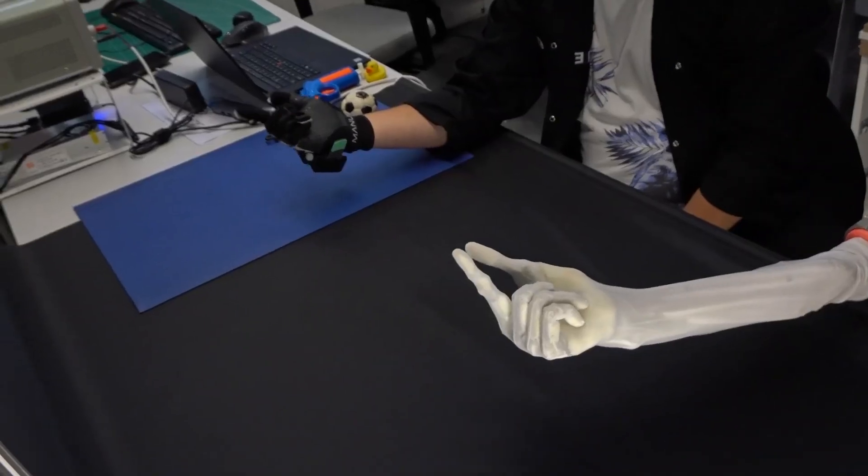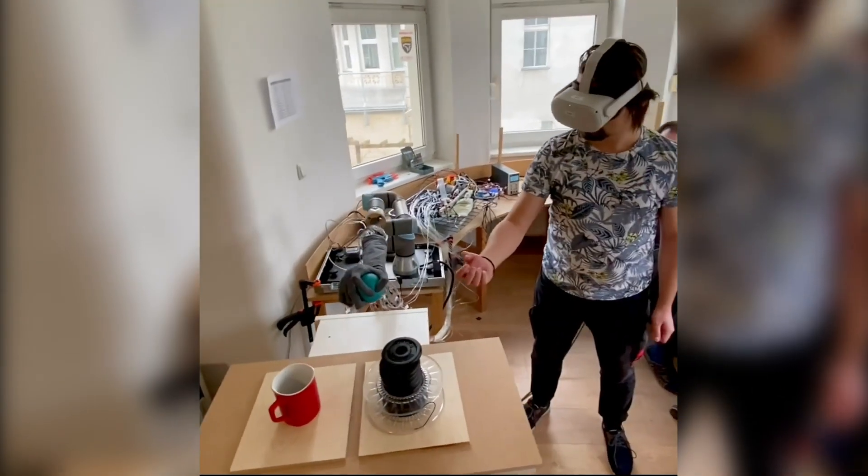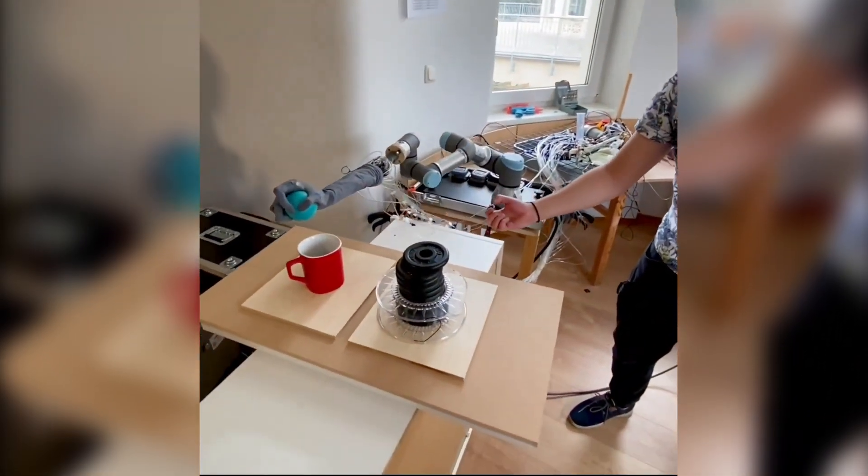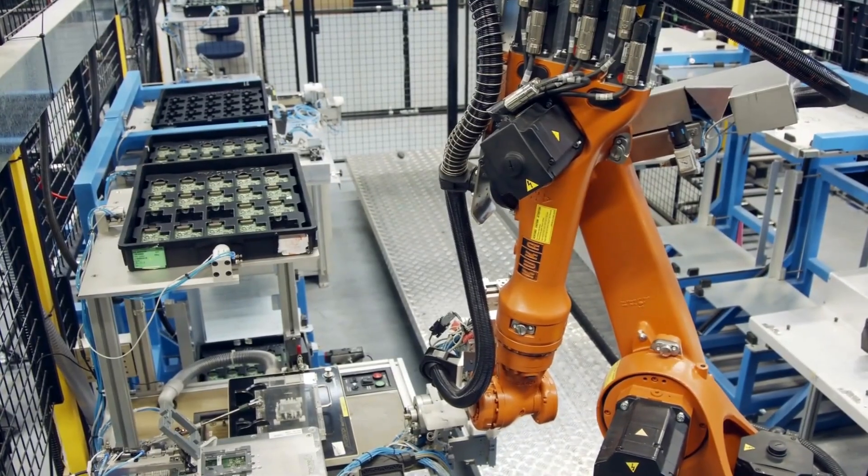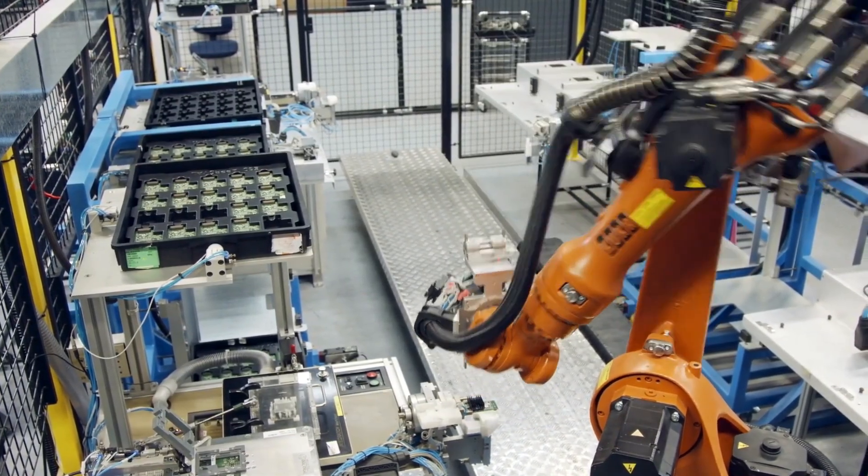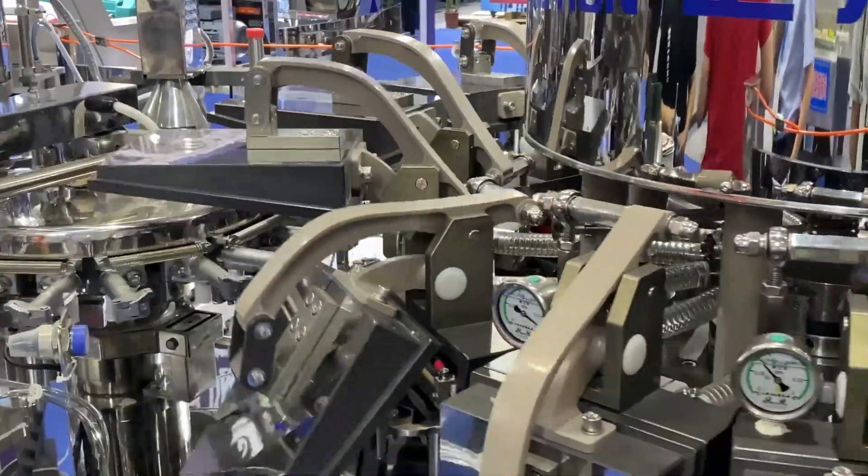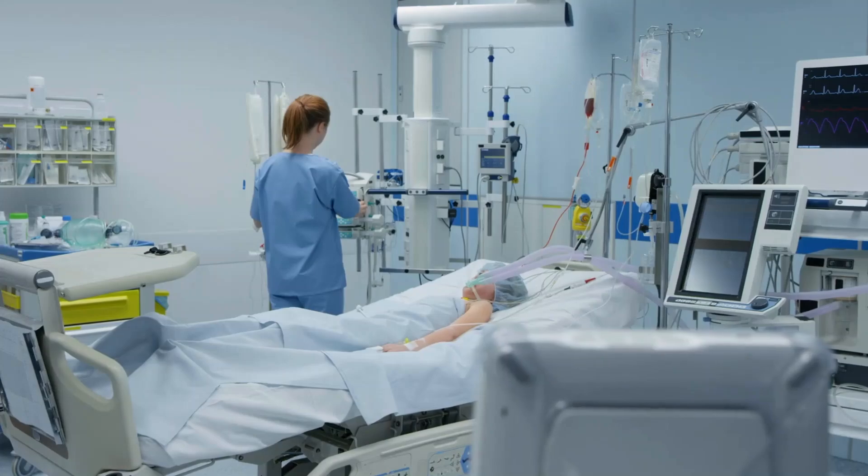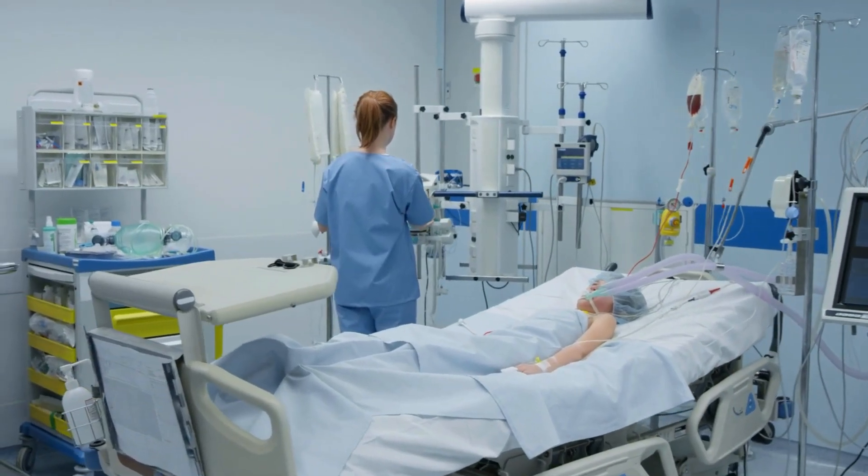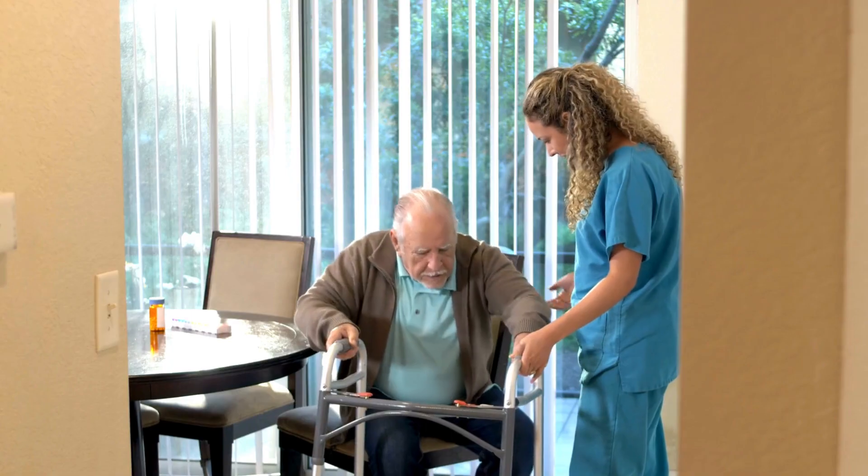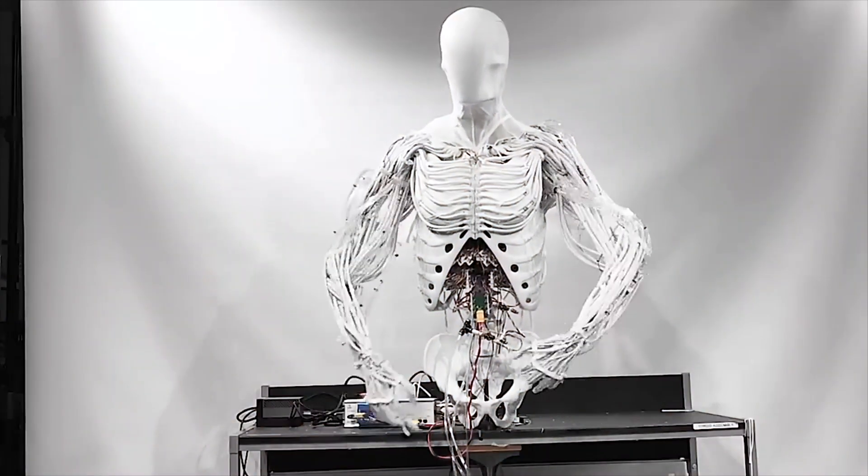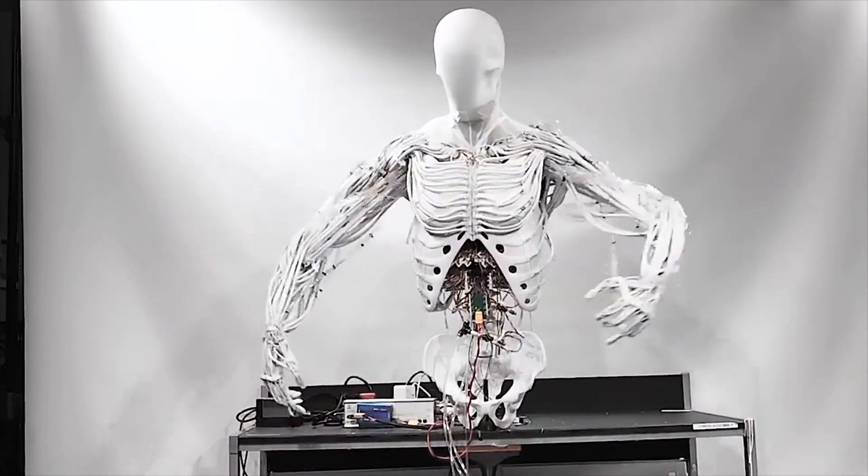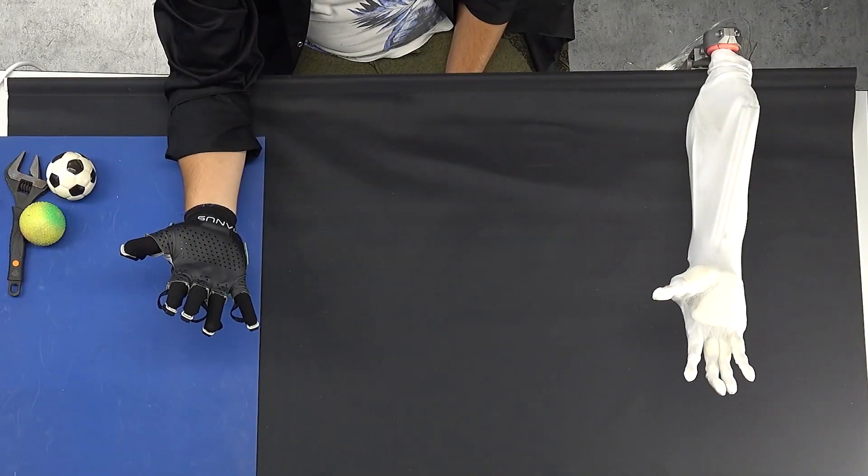So what does all of this mean for the future? Well, the potential applications are vast. Imagine having a household assistant that can handle delicate china with the same care that you would, sorting through fragile items without risk of damage. In industrial settings, these robots could revolutionize manufacturing processes, combining remarkable strength with precision in ways current machines simply cannot match. The healthcare sector stands to benefit enormously, as robots with natural, fluid movements could provide more nuanced patient care. Perhaps most intriguingly, this technology could dramatically advance our understanding of human biomechanics, offering insights into how our own bodies function and move.